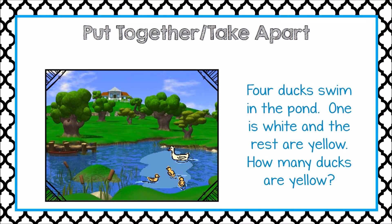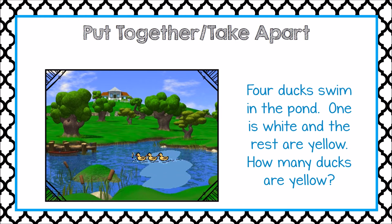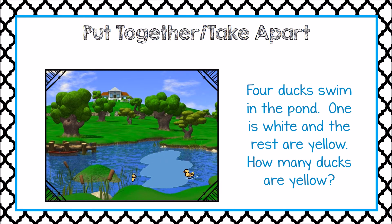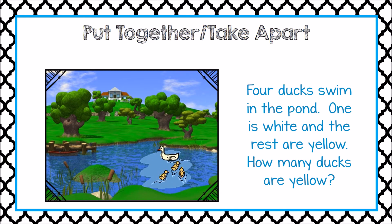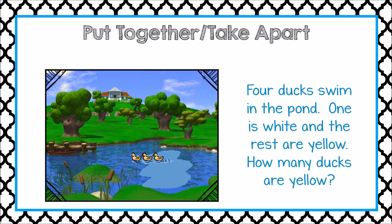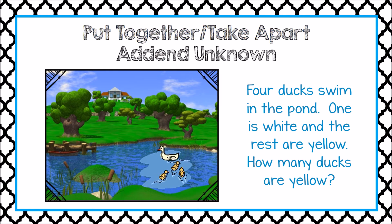Let's take a look at an example of a put together, take apart problem. Four ducks swim in the pond. One is white; the rest are yellow. How many ducks are yellow? We know the total amount of ducks in the pond, and we know one part or addend is white. We are looking for the other part. So this is an addend unknown problem.